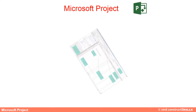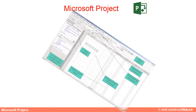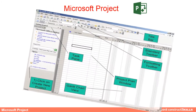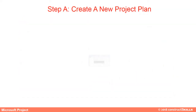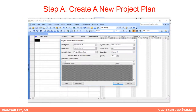The MS Project window includes different components like the task pane, standard toolbar, title bar, formatting toolbar, and more. This window is what you see when creating a new project plan.